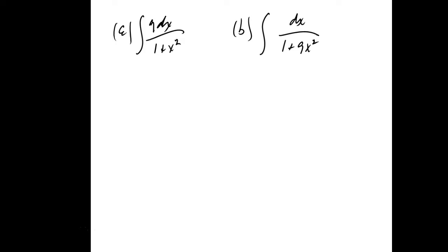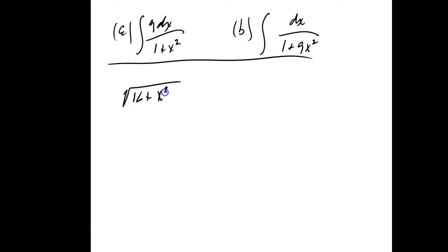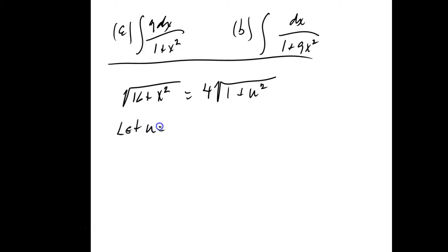Number 4: which relation between x and u yields the square root of 16 + x² equal to 4 times the square root of 1 + u²? Factor 16 out of both terms inside: that gives 4 times the square root of 1 + x²/16, so u² = x²/16, which implies u = x/4.